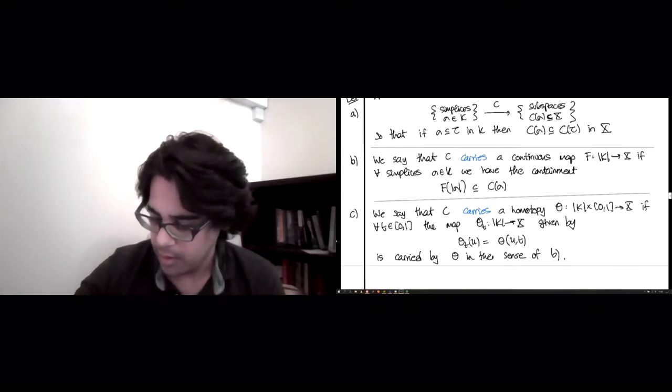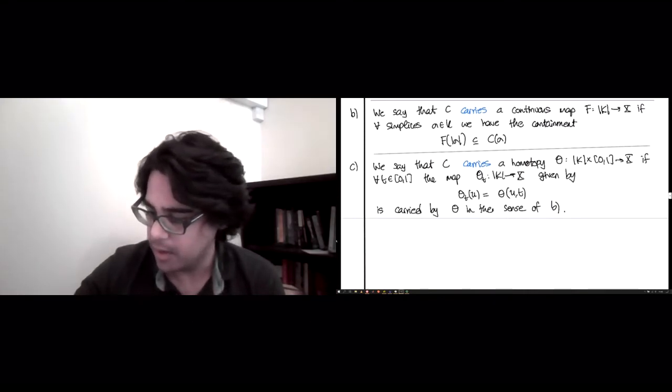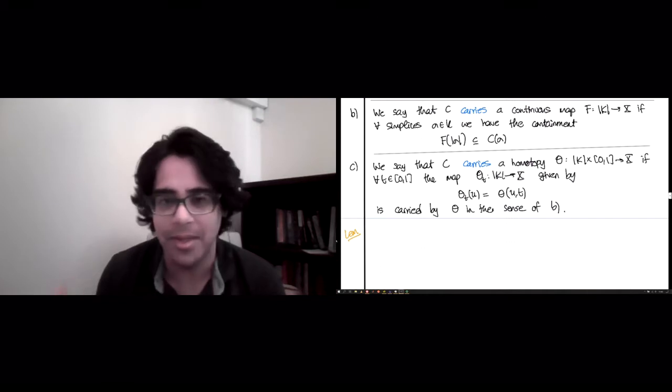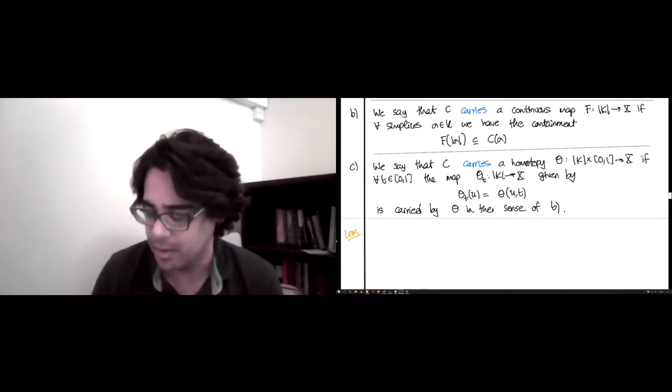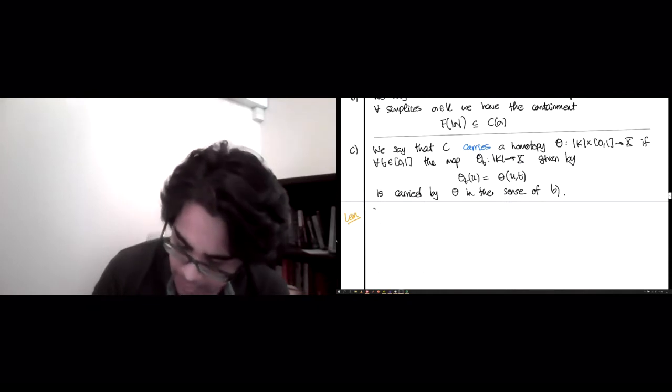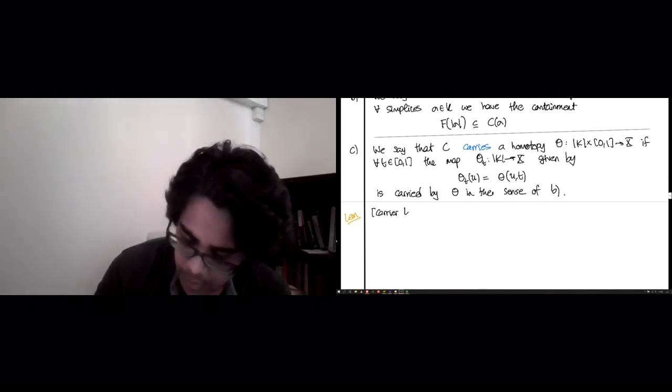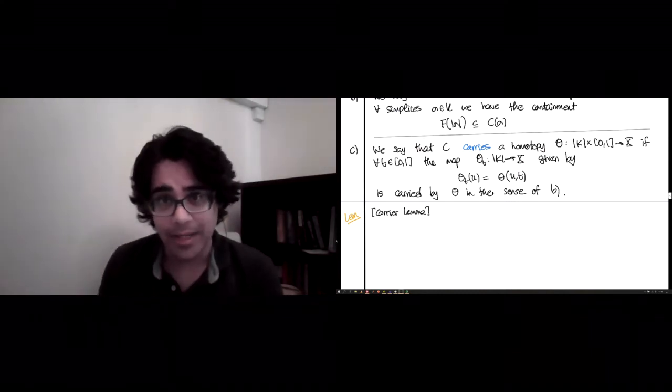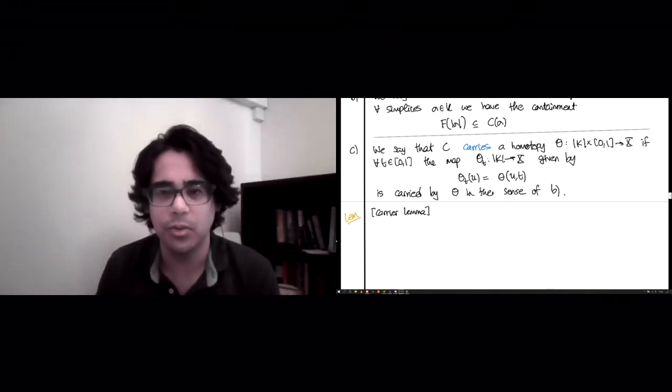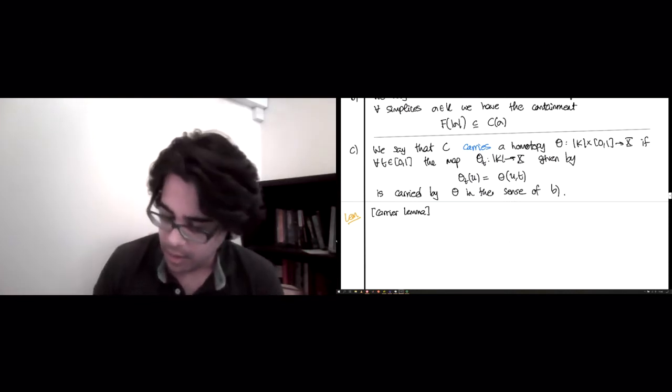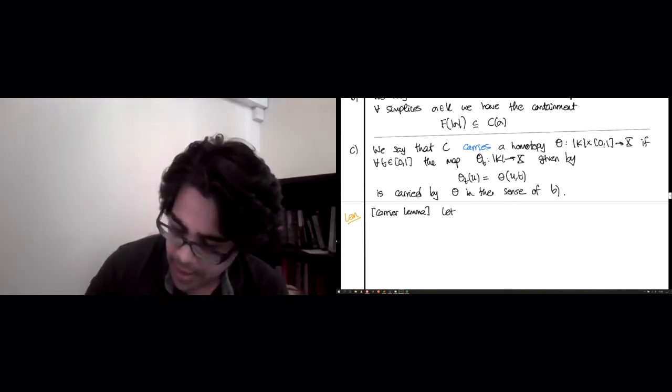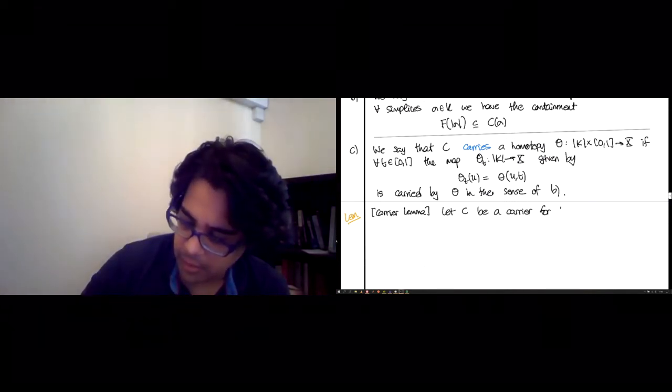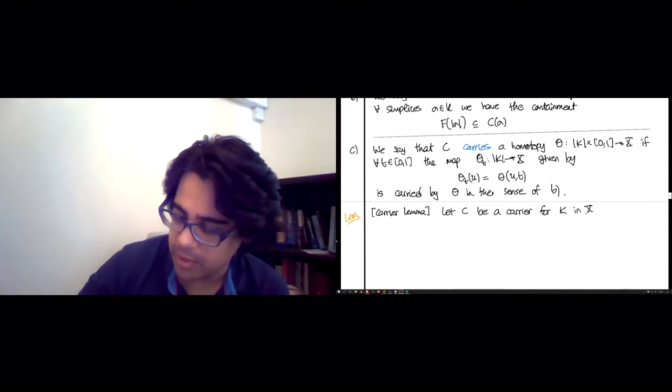Now here's the main result. This is big. This is what was promised as a big tool for detecting when two maps are homotopic. This is called the carrier lemma. And what is important to note as I write down and describe the statement is the absolutely crucial role played by contractible spaces. So here's the carrier lemma. Let C be a carrier for K, which is some simplicial complex, in X, which is some topological space.